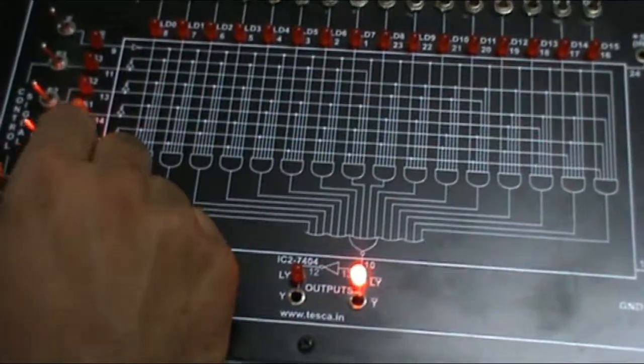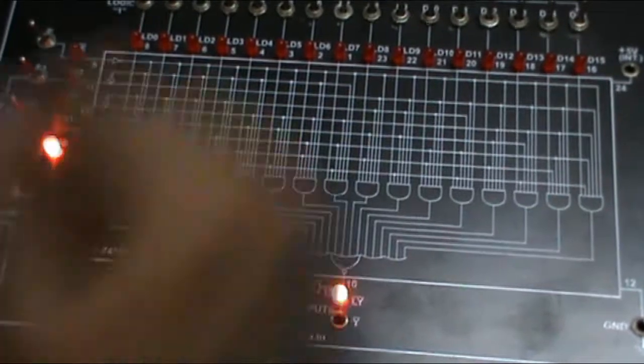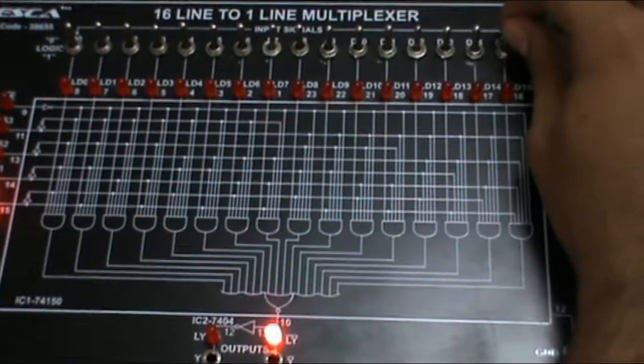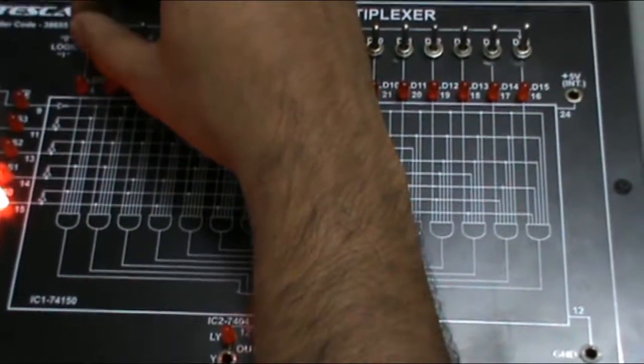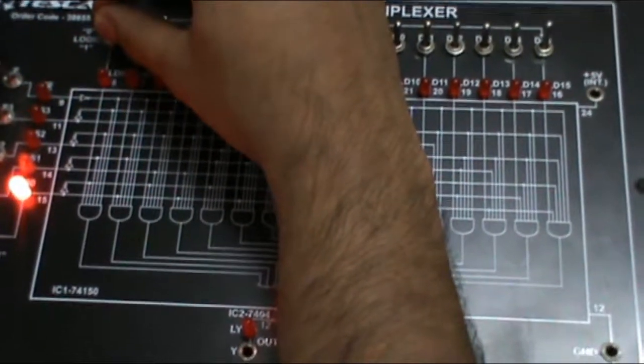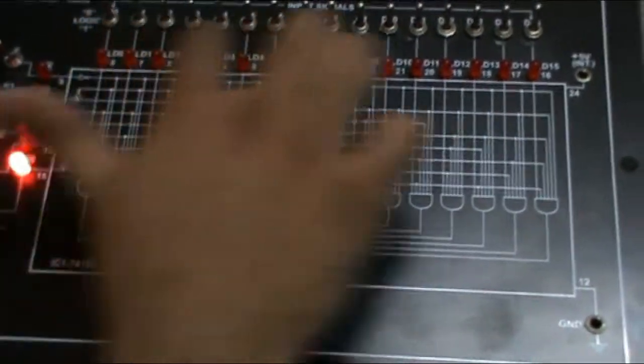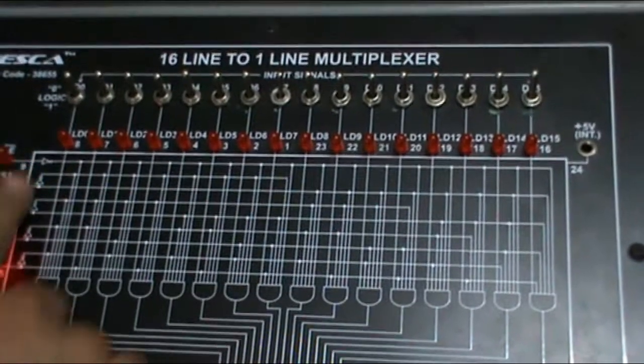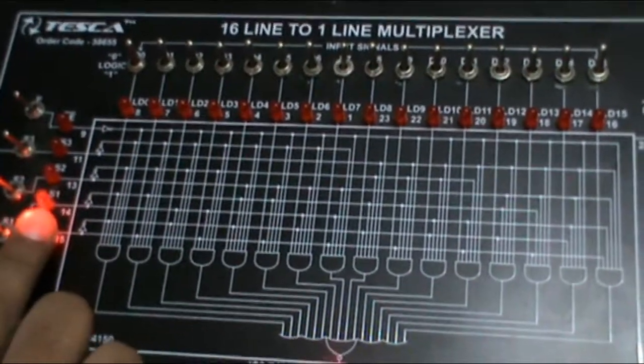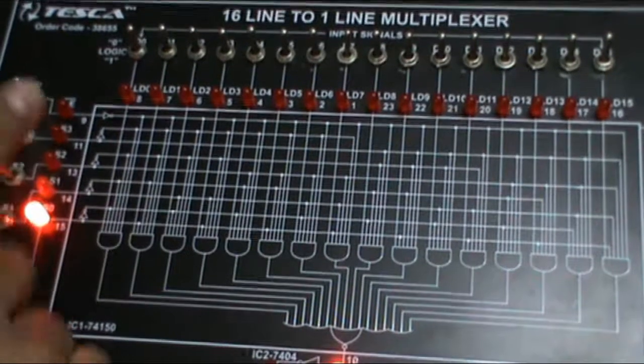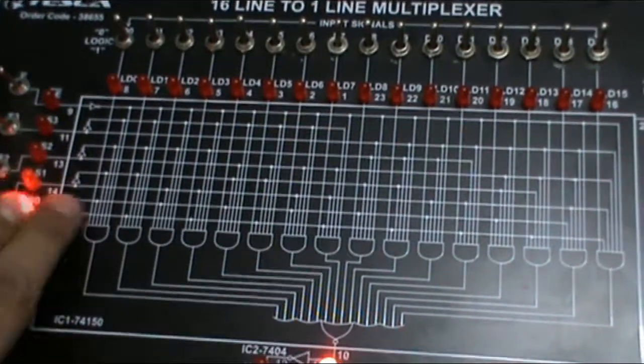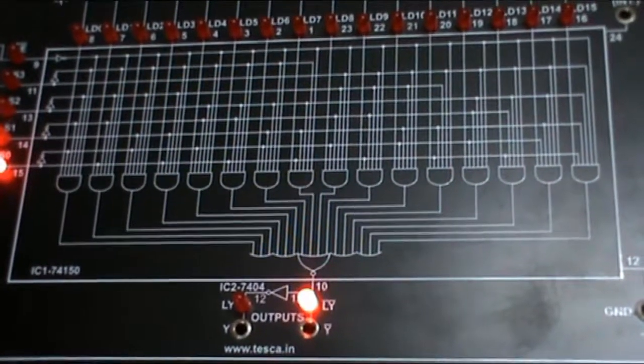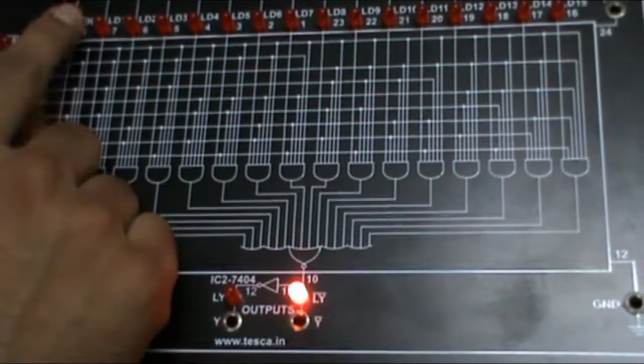When we give value, suppose I am giving 0001, now select any LED line as input signal and you have two positions, either 1 or 0. Set all the positions of these LEDs at different input signals. First, as I am giving 0001, now record all the output values of LY and LY bar according to the input signals of LED.